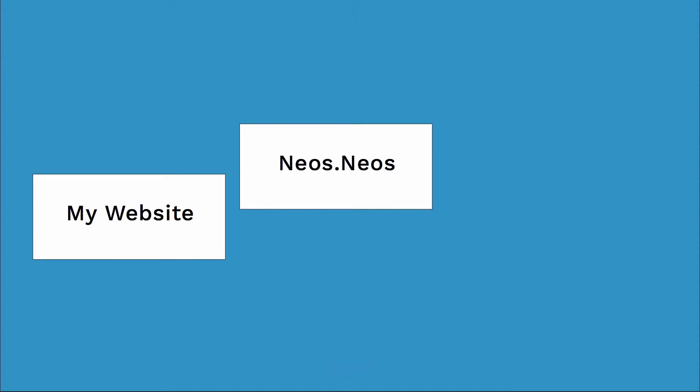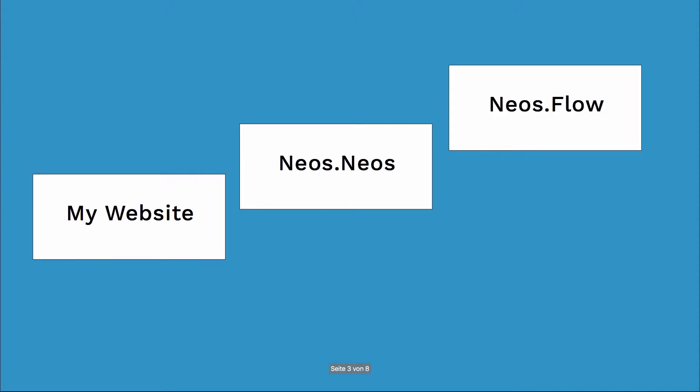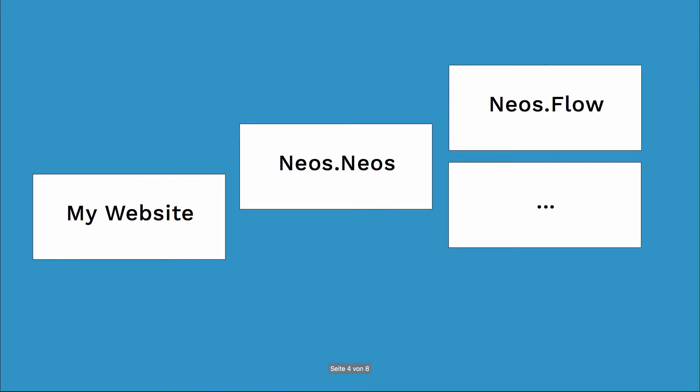For example, Neos requires Neos Flow, which is the framework used below the CMS system. It also requires many other packages, built not only by the Neos community but by other communities as well, which are shared across multiple frameworks.